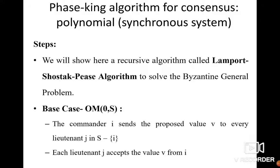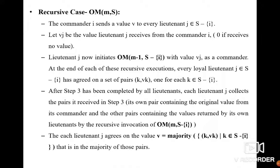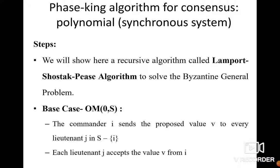In the base case, each substitute j accepts the value v from the commander. In the recursive case, commander i sends value v to every substitute. Each substitute j receives value vj from the commander, then initiates the process OM(m minus 1, S minus i) with value vj — the same function is called recursively. Finally, the majority value among all received values is taken as the final decision. That concludes the topic of agreement in failure systems. Thank you.